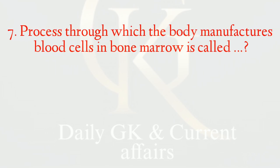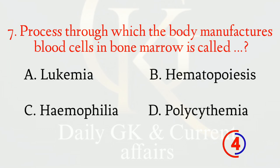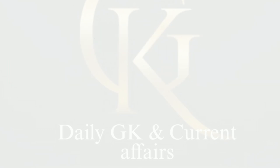The process through which the body manufactures blood cells in bone marrow is called? The correct option is b: hematopoiesis.